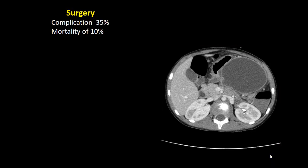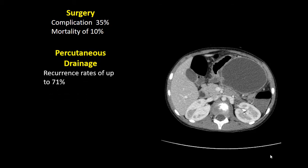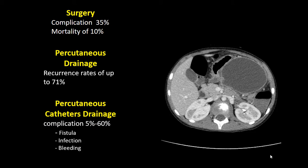In the past, complications of surgery and mortality were high when dealing with such cysts. Percutaneous drainage was frequently done; however, the recurrence rate was quite high, up to 71%. Percutaneous catheter drainage can be used to continuously drain the cysts, but complications are not low — they can lead to fistula, infections, and bleeding.